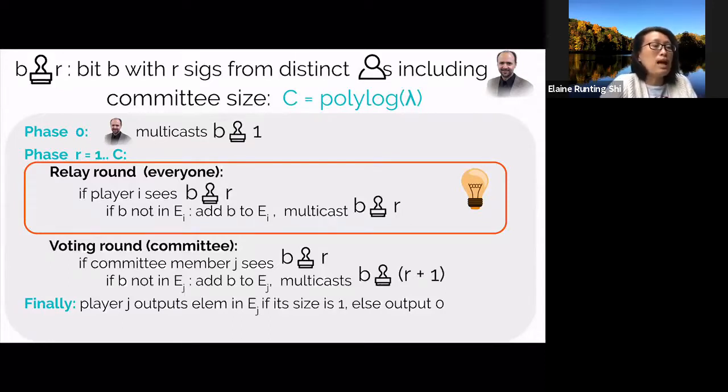Okay, so next is the voting round where committee members cast new votes. And this works the same way as before. Essentially, every committee member who observes an r batch of signatures adds b to its extracted set, and they will create a new vote for b by signing it, and then it will send an r plus one batch of votes to everyone. Okay, so keep in mind that only signatures from the committee count as valid votes. So it turns out this simple change gives us a polylog round protocol for the static corruption setting.